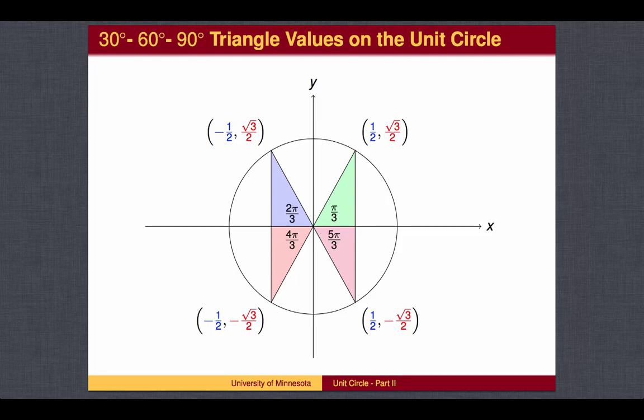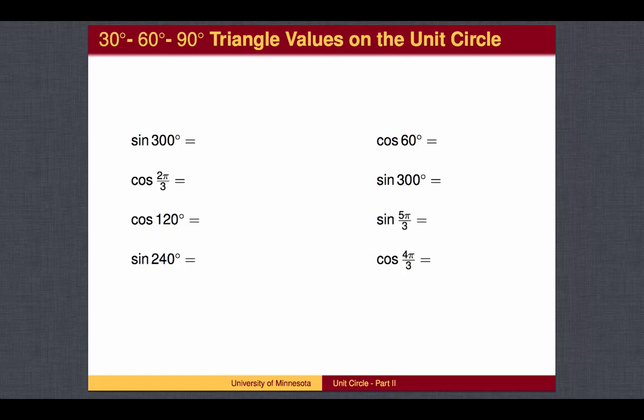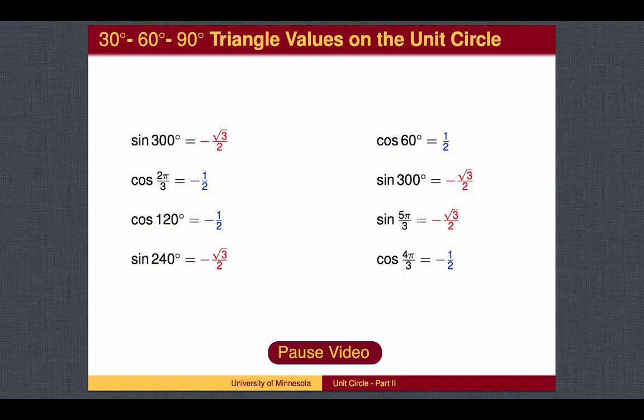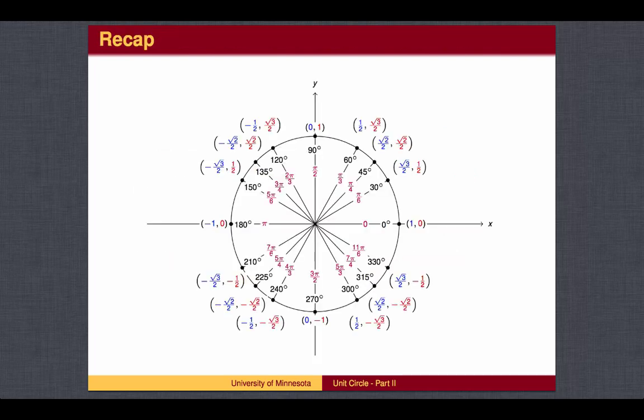The angles can also be measured in radians. To recap, altogether there are 16 special angles starting at zero and ending at 360 degrees, or 2π radians, for which you should be able to find the cosine and sine values.